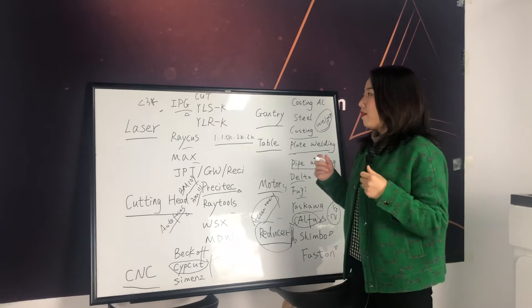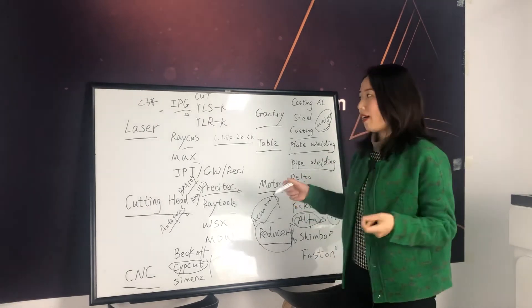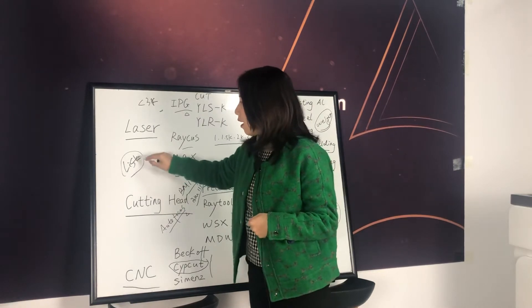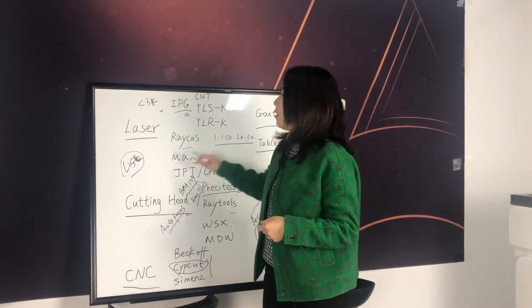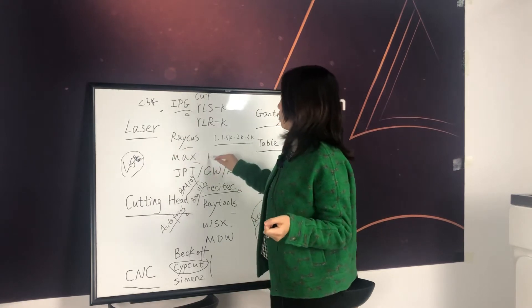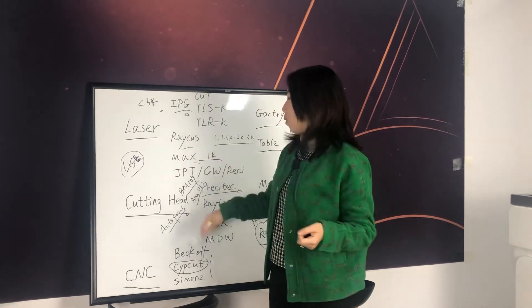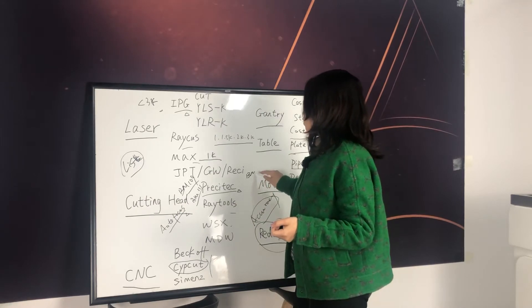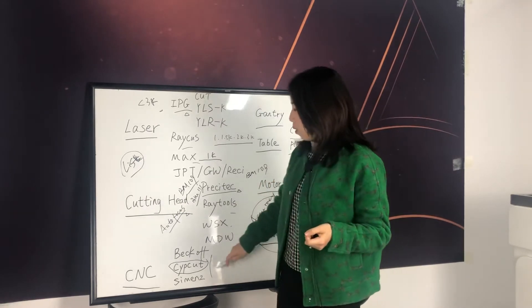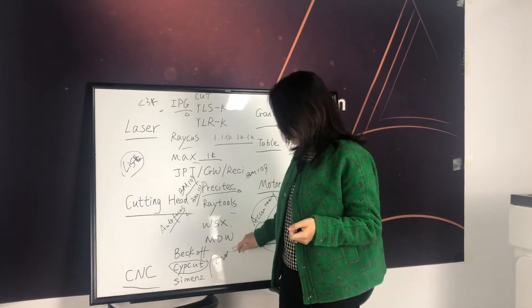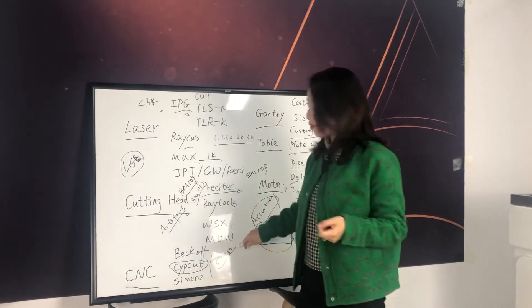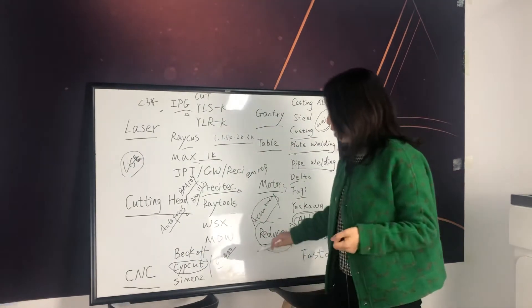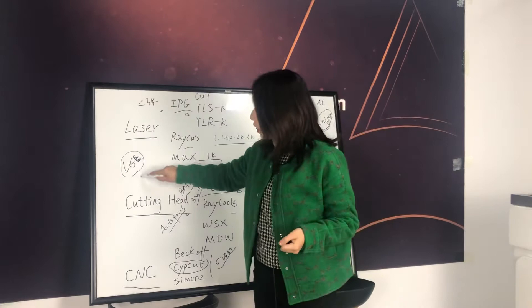There are many occasions that people gave me a list. All these configurations are fixed. I mean, for example, he said, I want Maxx one kilowatt. And I want cutting head BM109 auto-focusing. And I want Cypcut C2000 because C2000 supports auto-focusing. C1000 doesn't support auto-focusing. So when we have a fixed list,